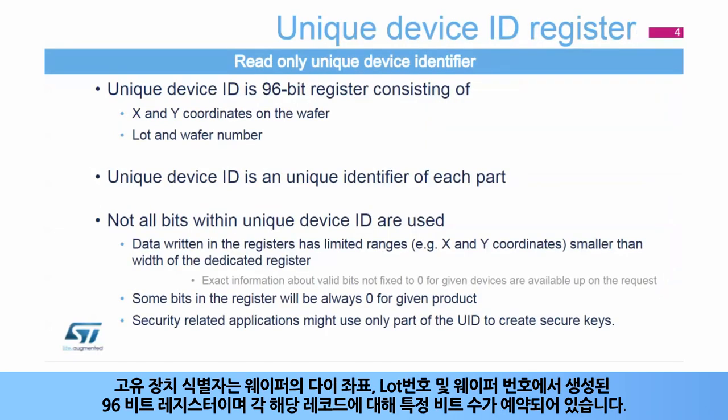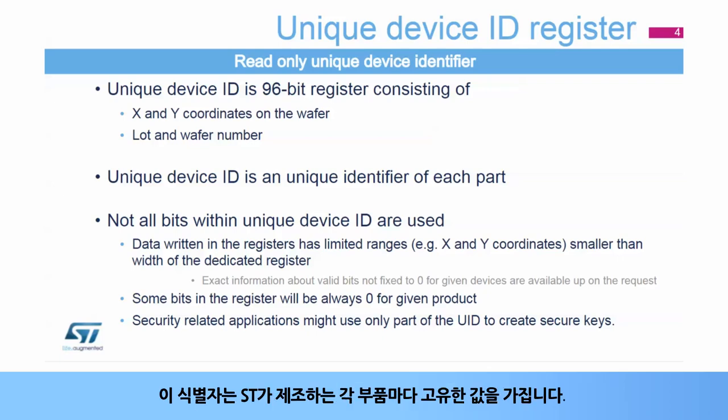The unique device identifier is a 96-bit register created from coordinates of the die on the wafer, lot number, and wafer number, with a certain number of bits reserved for each of those records. This identifier is unique for each part manufactured by ST.